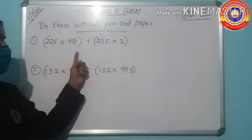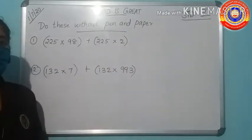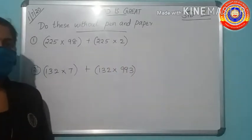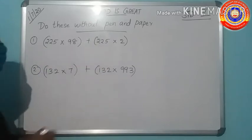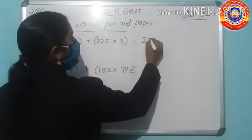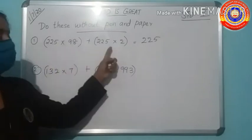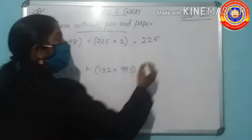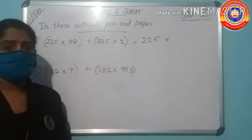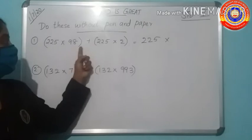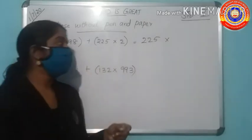First question: 225 into 98 plus 225 into 2. Let's do this question in the simplest method. Here, inside the bracket, which numbers and symbols are common? 225 and the symbol common is multiplication symbol. Then write the multiplication symbol here. Which numbers and symbol is not common? 98 plus 2. Find 98 plus 2. What is the answer? Yes, 100.